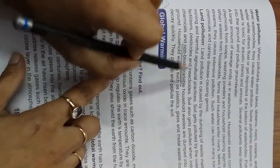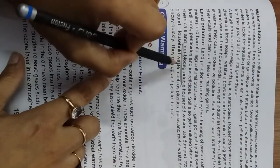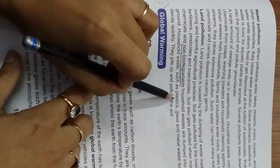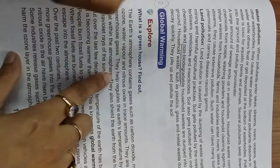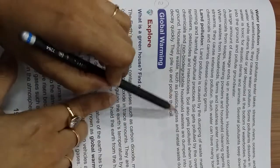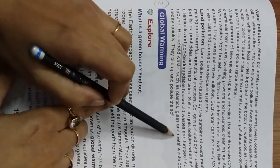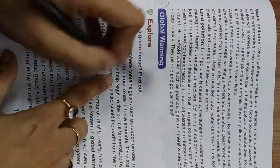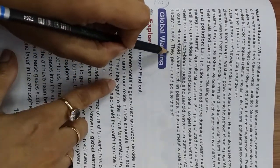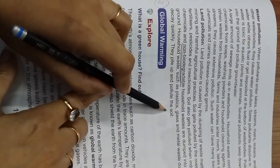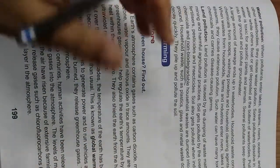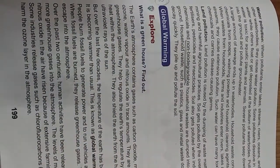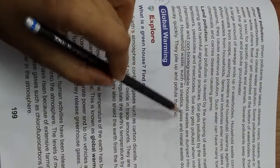Household waste such as plastics, glass, and metal waste do not decay quickly. It takes years to decay. They pile up and pollute the soil. Non-biodegradable waste like plastic, glass, and metal are polluting our land.